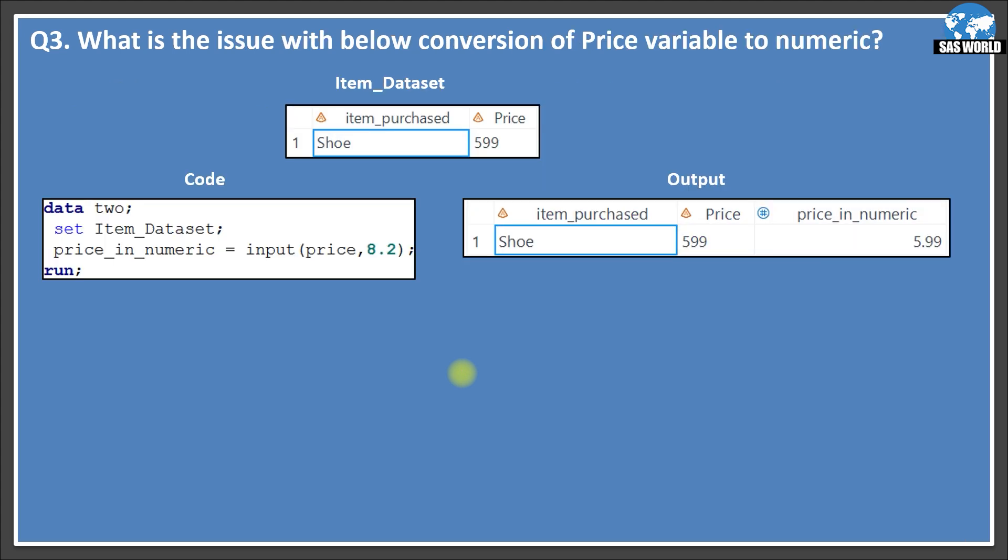Let's move on to the next slide. What is the issue with below conversion of price variable to numeric? So here what I'm using here, I have a data set item underscore data set, and it contains two variable item purchased and price. So item purchases shoe and price is 599. So you can see here this variable is a character variable similar to this. So I just wanted to convert it into numeric. So I use this code data to set item underscore data set price in numeric input price 8.2. So we know that input function is used to convert character to numeric. So this variable I'm converting and then I have given in format as 8.2. .2 is for decimal width. So here you can see there is no decimal. Still I have given this 8.2.